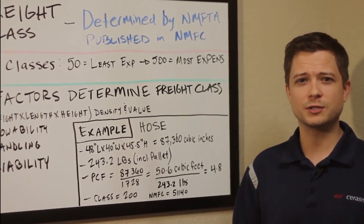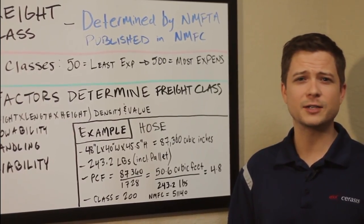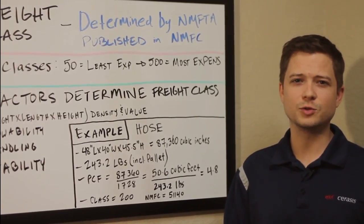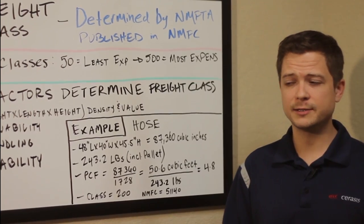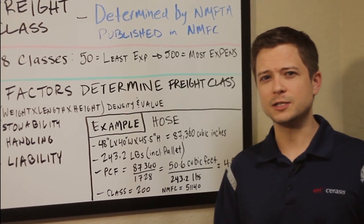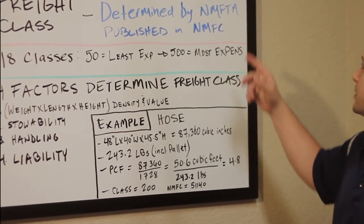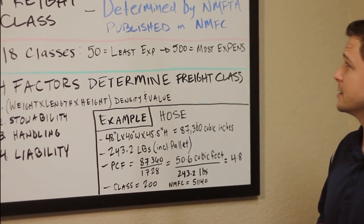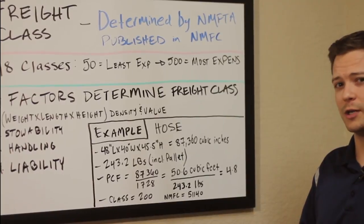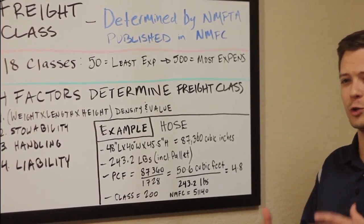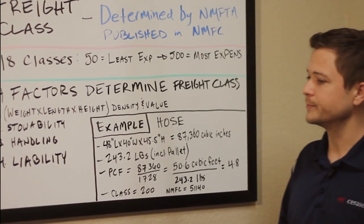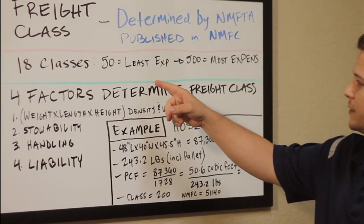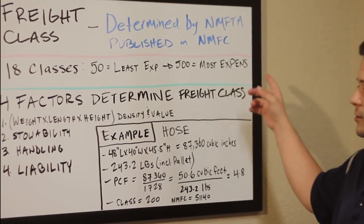Today, we'll answer both those questions. We'll define freight class, and then we'll talk about the factors that go into it, going over a specific example to help you understand how to determine freight class. Freight class is something that is determined by the NMFTA, the National Motor Freight Transportation Association. They publish these freight classes in the National Motor Freight Classification Book — the NMFC for short. There are 18 classes in the NMFC, ranging from 50, which is the least expensive class, to 500, the most expensive.